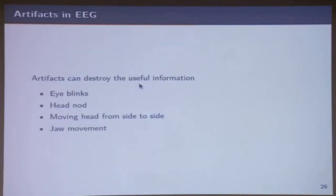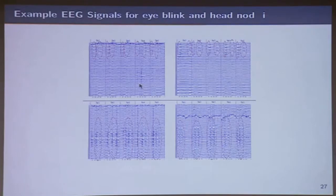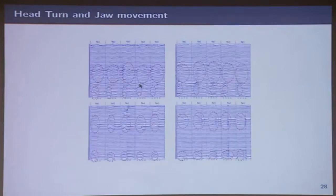We realized there are not only eye blinks but also head nods, moving head from side to side, and jaw movements. This is the signature for eye blinks across subjects, the signature for head nods across subjects, and the signature for jaw movement across subjects.